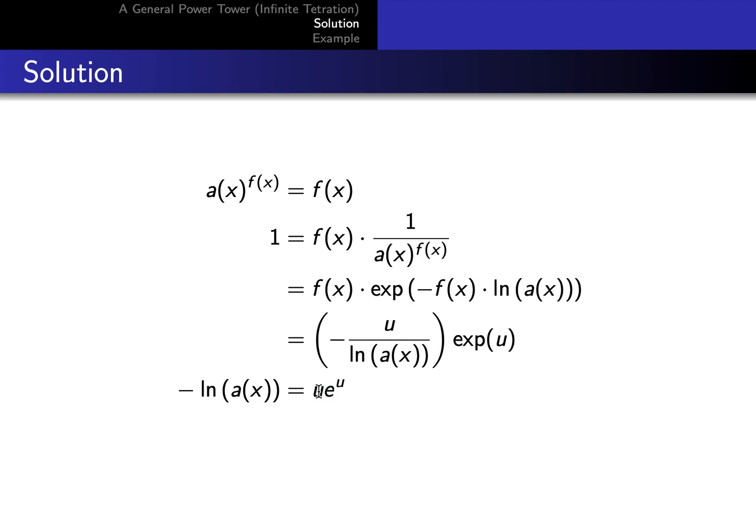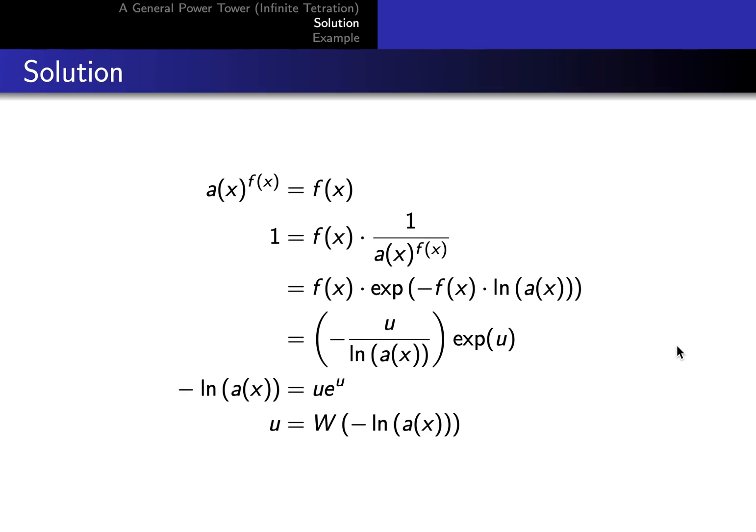So once we arrive at that expression, it's pretty much solved, because we take the Lambert function of both sides, and we're left with this. Then we just plug in for u, and we have f of x.